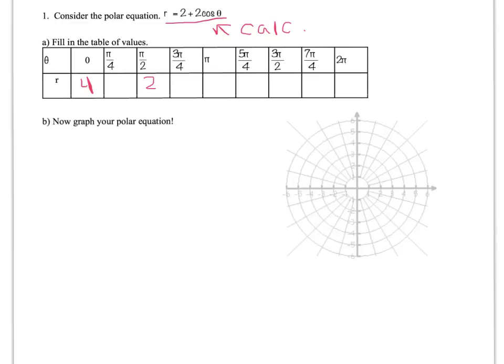The cosine of pi is negative 1, so 2 plus 2 times the cosine of pi is 2 plus 2 times negative 1, which is 0.